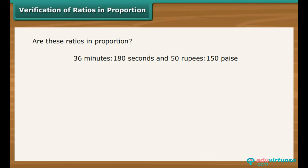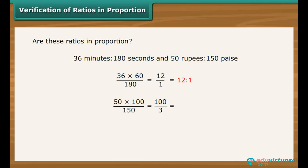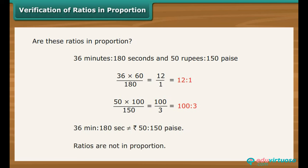Consider two more ratios: 36 minutes is to 180 seconds and Rs. 50 is to 150 paise. 36 minutes divided by 180 seconds equals 36 × 60 seconds divided by 180 seconds, which is 12 is to 1. Rs. 50 divided by 150 paise equals 5000 paise divided by 150 paise, which is 100 is to 3. Since the ratios differ, 36 minutes is to 180 seconds is not equal to Rs. 50 is to 150 paise — the ratios are not in proportion.